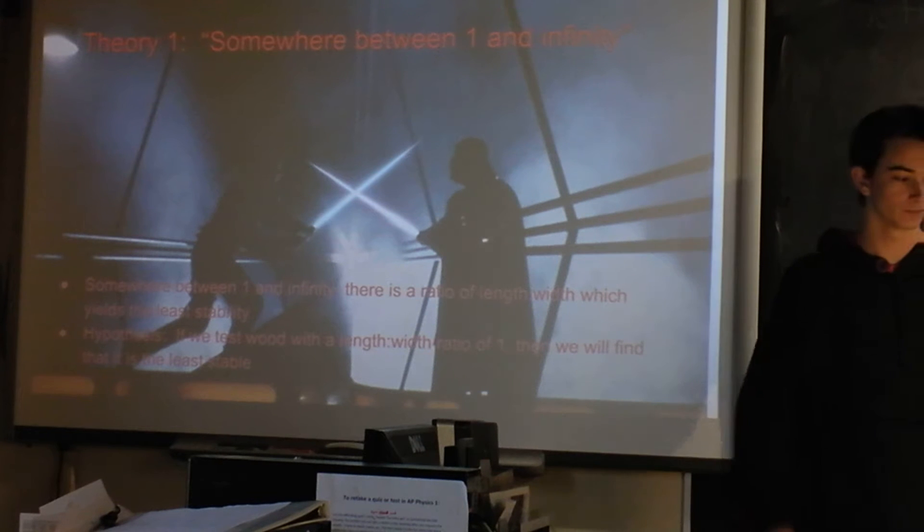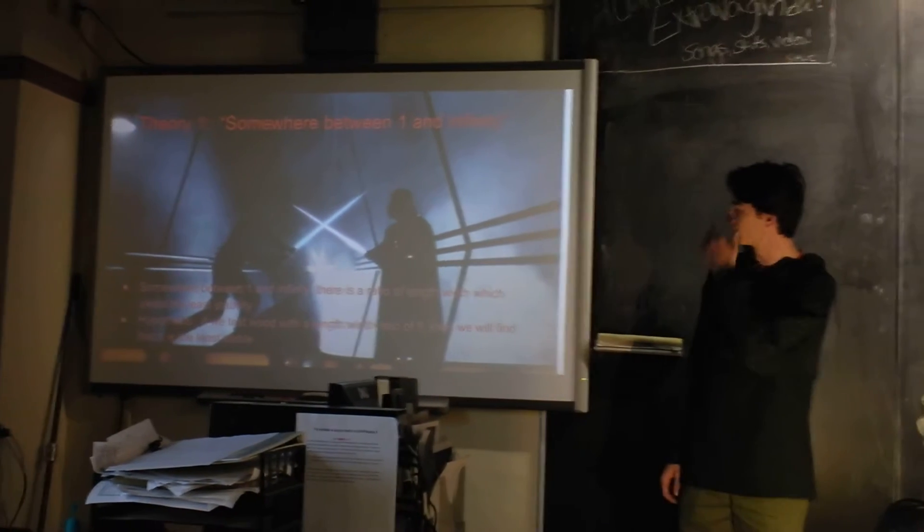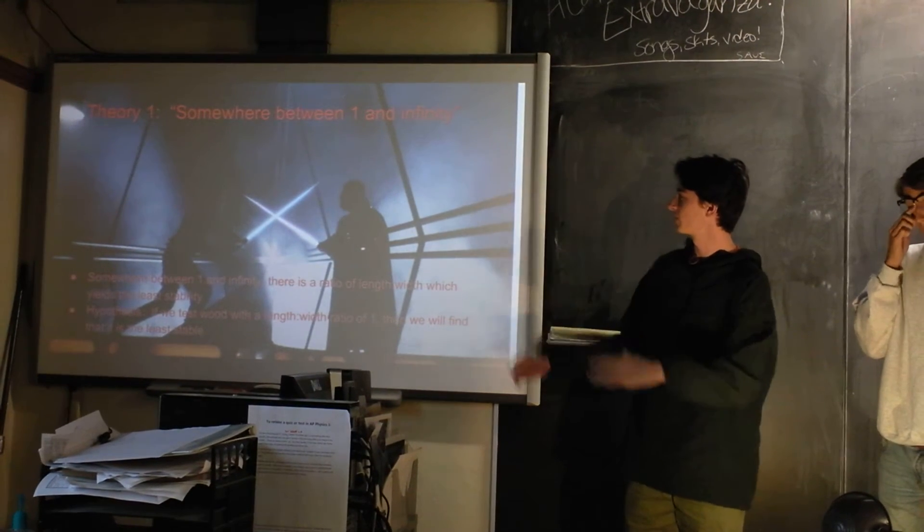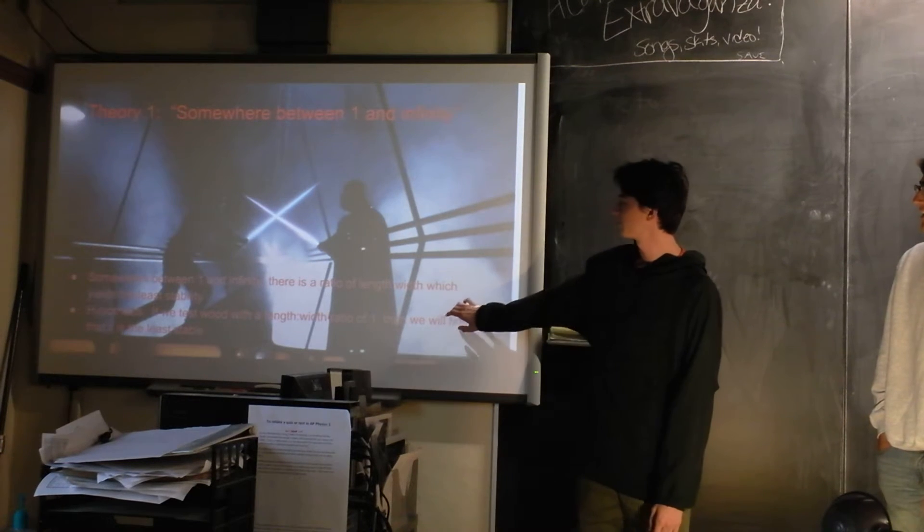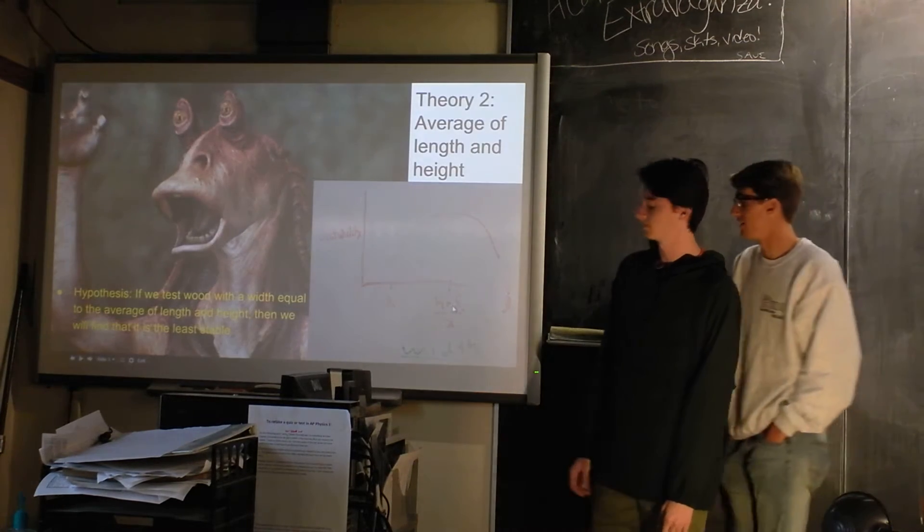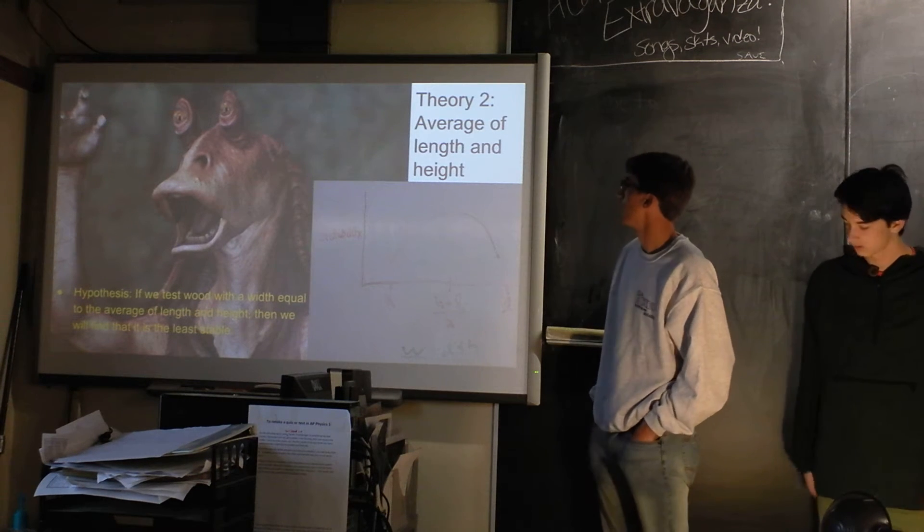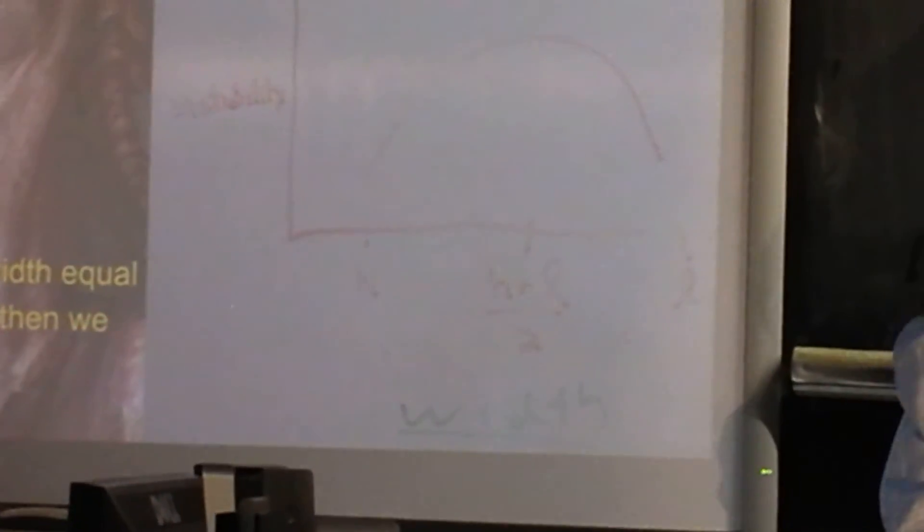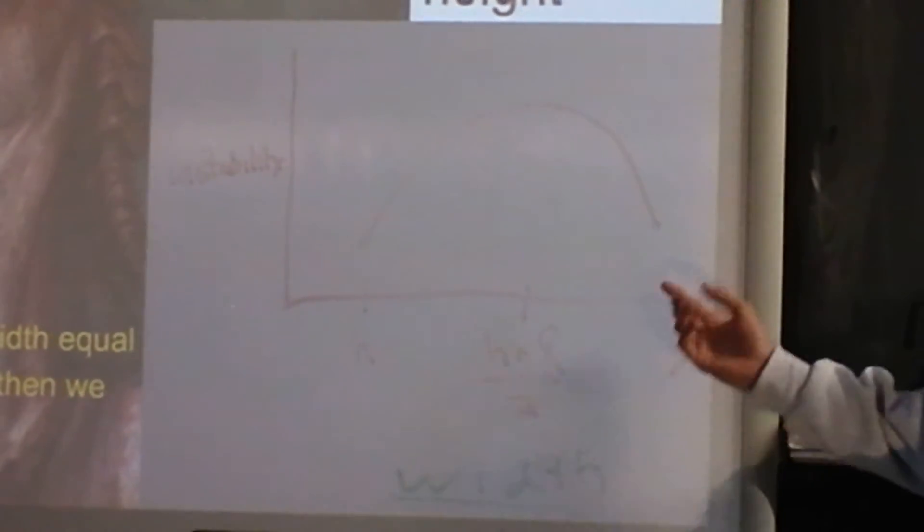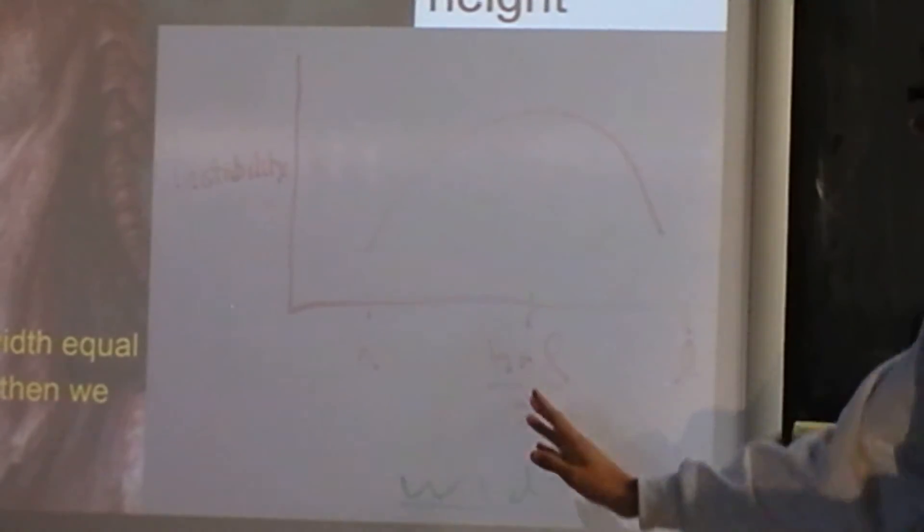So, the ratio between length and width, we thought that it would be between 1 and 50. And then our other theory was that the least stable flip would occur when the ratio was an average of the length and height. And here's like a little graph to show you what we kind of visualized that would look like. Nice little curve, H plus L over 2, right at the peak.